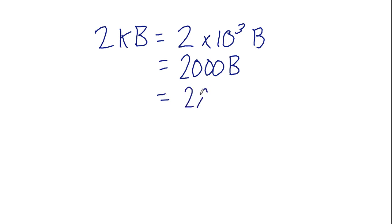As another example, if we have 2 kB, using our standard notation, that is 2 times 10 to the power of 3 bytes, which is 2,000 bytes, which is 2,000 multiplied by 8 bits, because we have 8 bits in 1 byte, so 16,000 bits. 2 kilobytes is equal to 16,000 bits.